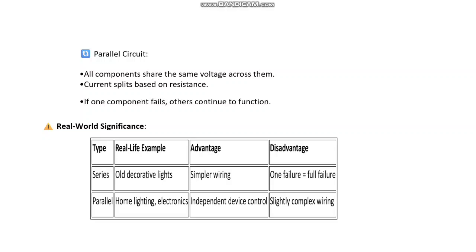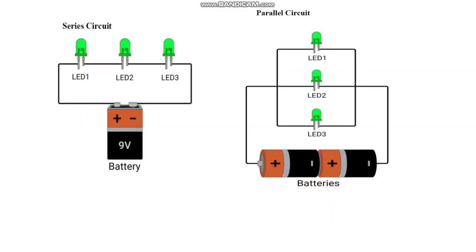Coming to real-world significance: series connections are used in old decorative lights and simple wiring — if one fails, the complete circuit fails. Parallel circuits are used in home wiring and electronics, where independent device control is the advantage, though they are slightly more complex compared to series.